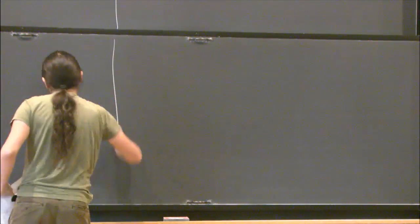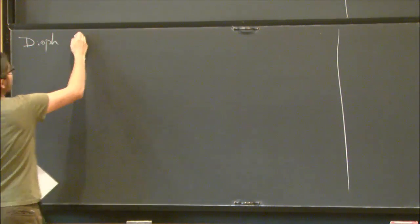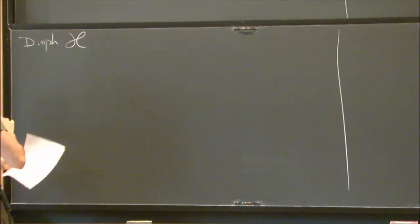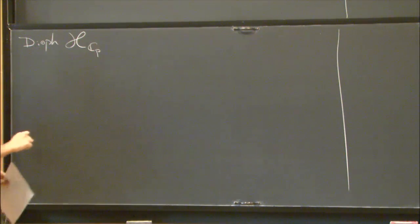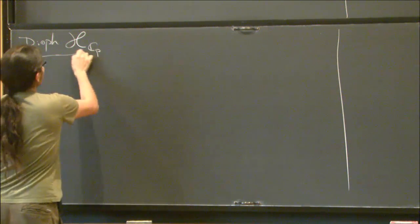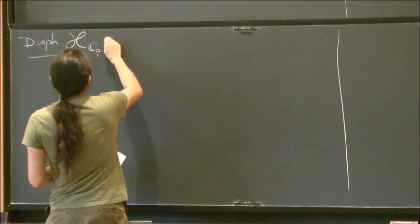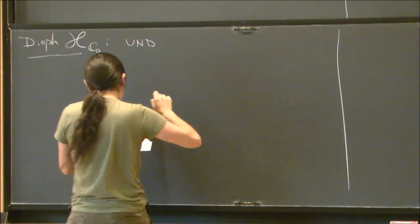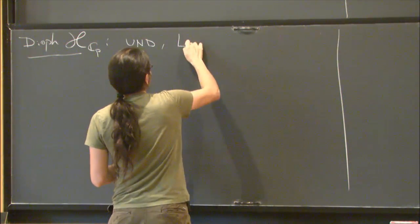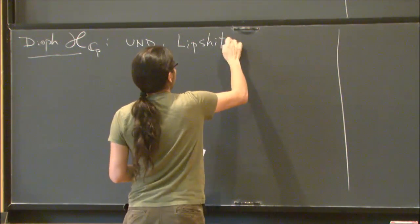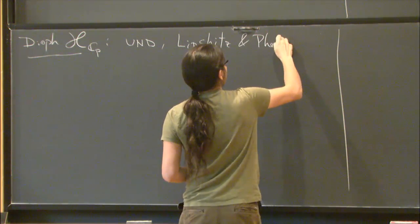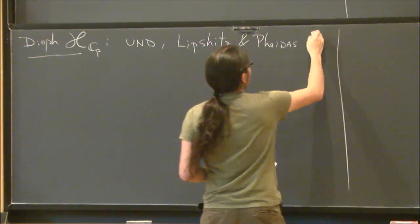This is what we know on the meromorphic side. The Diophantine problem for analytic functions over a complete algebraically closed non-Archimedean field of characteristic zero—let me just think about Cp. If you ask the analogous question to Hilbert's 10th problem in this case, appropriately formulated, you get undecidability. This is undecidable, and this is a theorem of Leichter and Pheidas, '95.